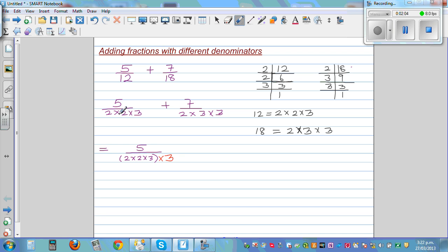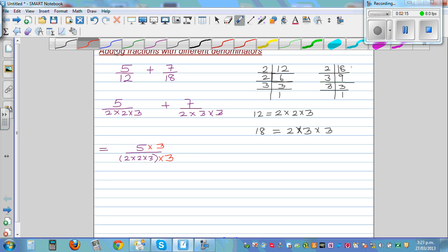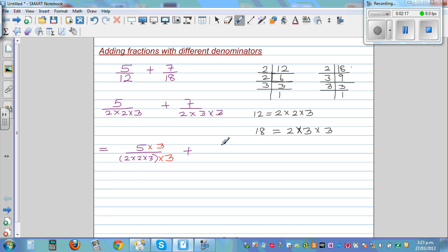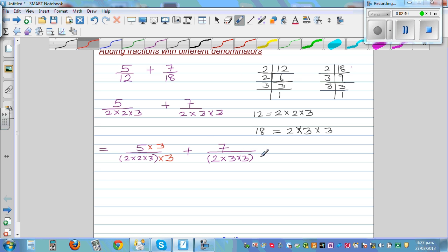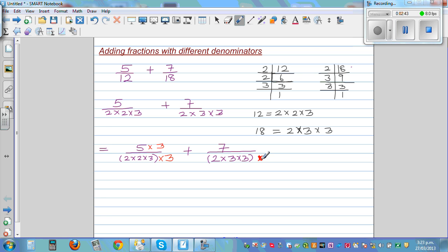So I'm going to write a 3 here, because this denominator tells that it has got one more 3. So I'm going to multiply the denominator by 3. Now, plus 7 over 2 times 3 times 3 is what the denominator is. Now I'm looking this side. What is this denominator having? This has got two 3's and two 2's, but this has got only two 3's and only one 2. So I'm going to multiply this by 2.